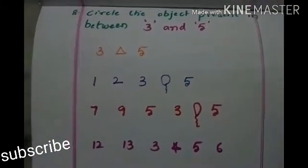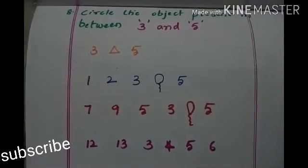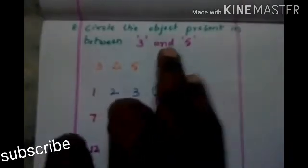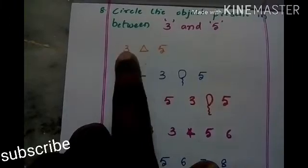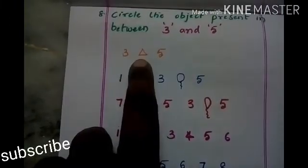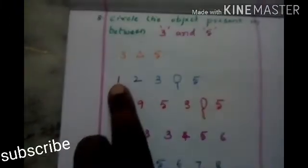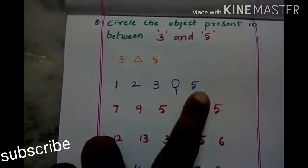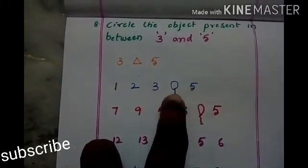Then we have to see between numbers. Between means present between. Circle the object present in between 3 and 5. Where is the 3 and where is the 5? It is 3 here, it is 5 here — in between these 2, what is there? It is triangle. And here, where is the 3 and 5? 1, 2, 3, 5 — in between 3 and 5, what is there? Balloon is there.